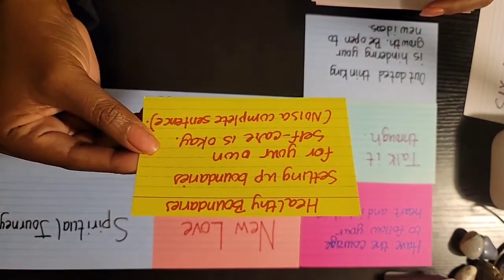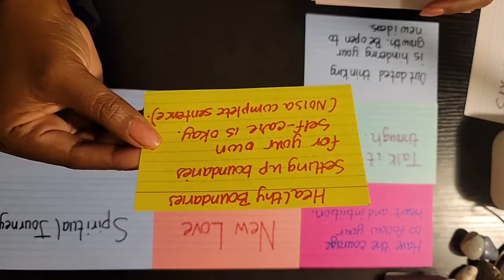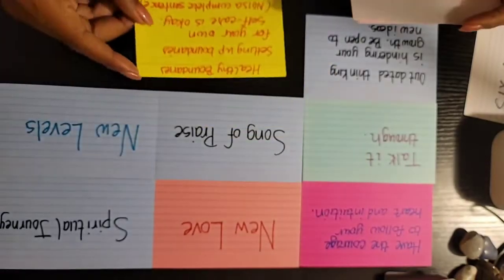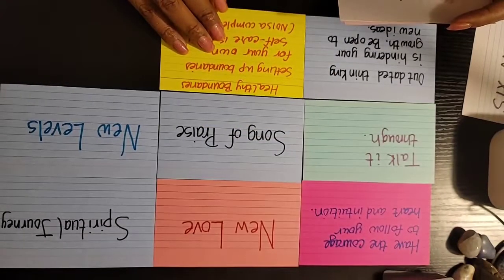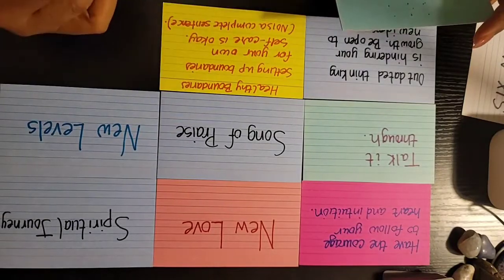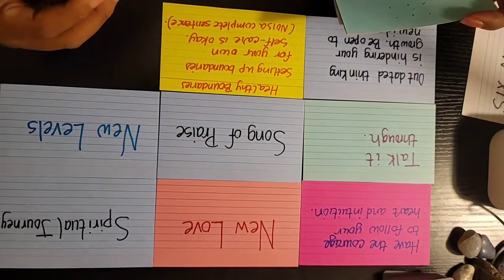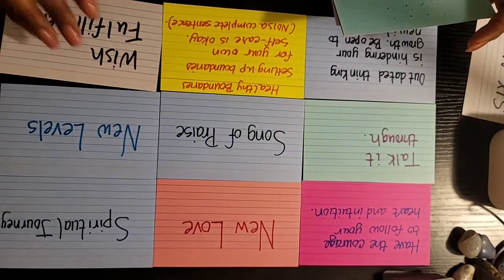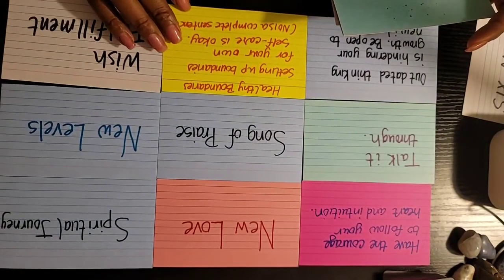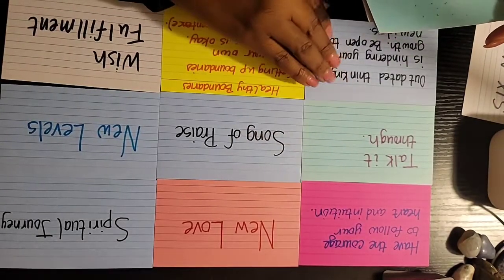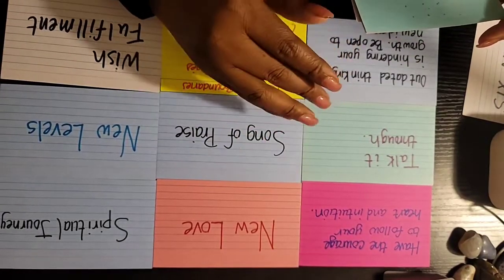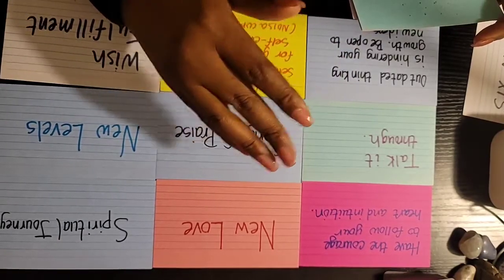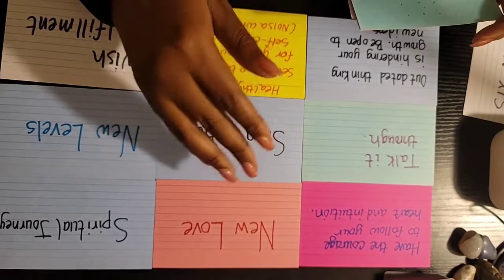Set up healthy boundaries for your own self-care. It is okay. No is a complete sentence. We know a lot of times Tauruses have a hard time saying no. Your wishes are about to be fulfilled. Set up those boundaries, Taurus, because in the past you did not have strong boundaries.